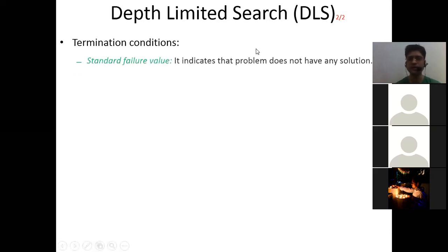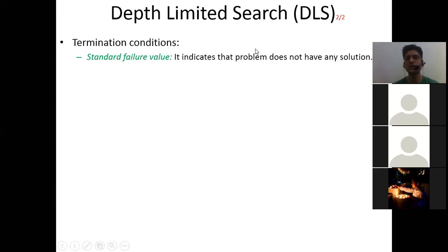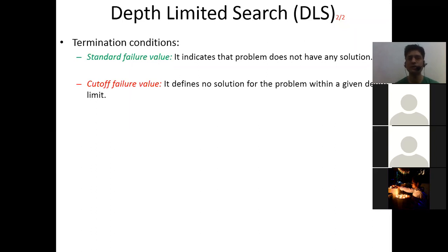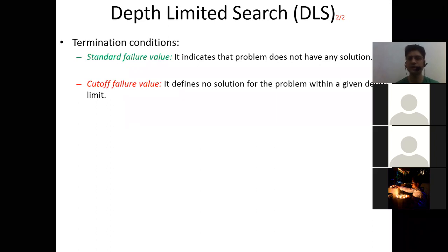There are some advantages and also disadvantages. The termination conditions are: first, standard failure value — this indicates the problem does not have any solution, meaning the goal does not exist in the problem you are searching. Second, cutoff failure value — cutoff means you have given a depth limit, and it defines no solution within that given depth limit. In this manner, depth limited search can be terminated.